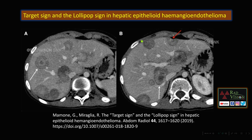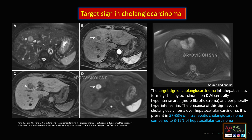Next: target sign and lollipop sign. The target sign and lollipop sign — where there will be a feeding vessel entering into the lesion — can both be seen in hepatic epithelioid hemangioendothelioma.